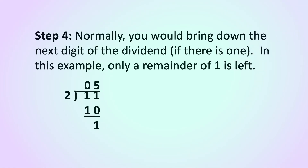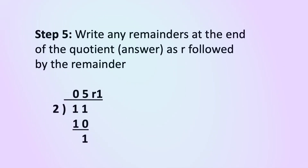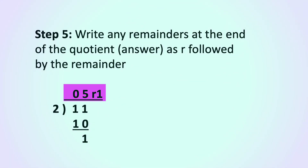Step 4. Normally you would bring down the next digit of the dividend if there is one. In this example, only a remainder of 1 is left. Step 5. Write any remainders at the end of the quotient — the answer — as R followed by the remainder. So here we have 5 remainder 1.